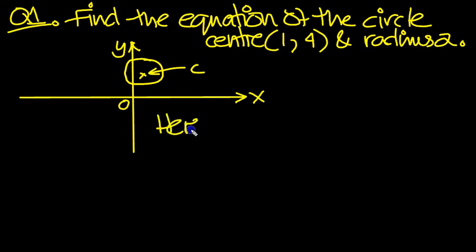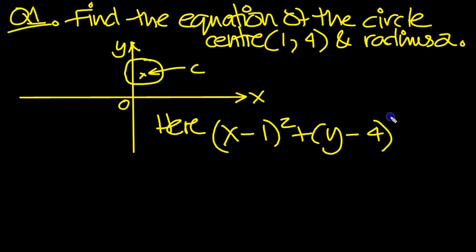So here, x minus the first value, squared. This is the standard form of an equation of a circle. Now y minus 4, that value squared, is equal to the radius squared, which is 2 squared.